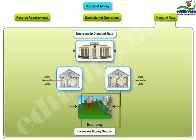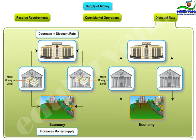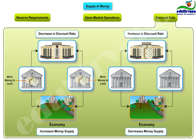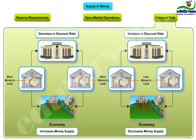When the central bank increases the discount rate, it discourages banks from borrowing from the central bank, so they borrow less and the banking system has less money than it had before. Thus, an increase in the discount rate reduces the quantity of reserves in the banking system.